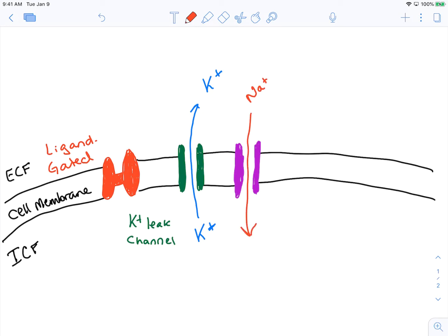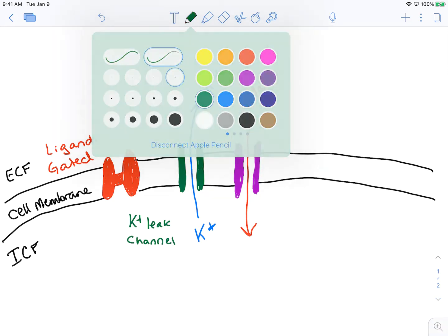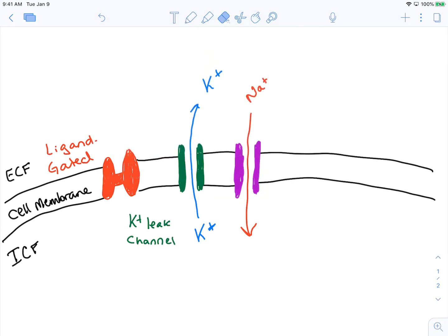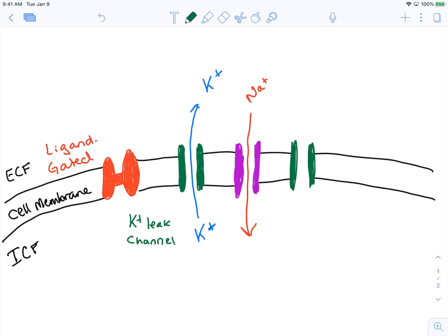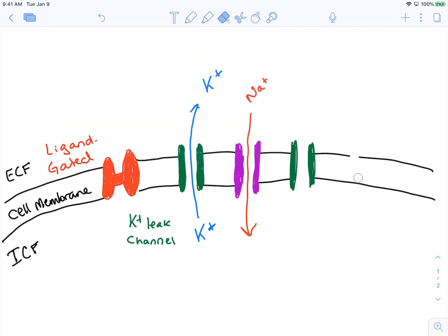You'll find these types of channels in virtually every cell of the body. In neurons and many cells, if we count up all the numbers of different channels, the potassium leak channels outnumber the sodium leak channels by about 10 to 1 or 9 to 1. For every 10 potassium channels, we'd have one sodium leak channel.